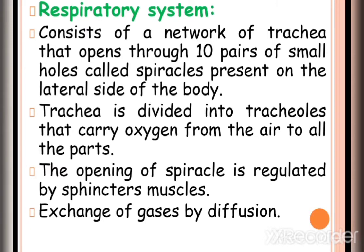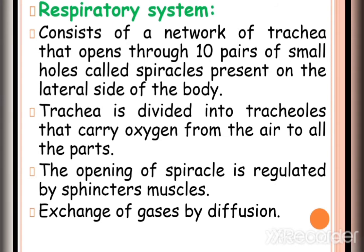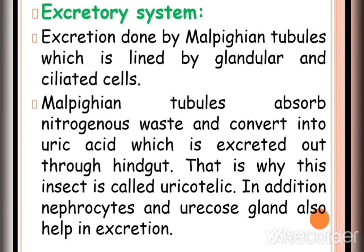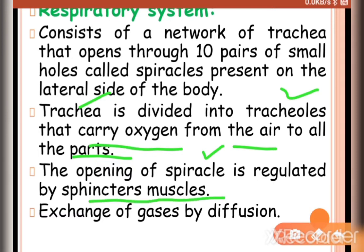The respiratory system consists of a network of trachea that opens through 10 pairs of small holes called spiracles, present on the lateral side of the body. The trachea carry oxygen from the air to all parts of the body, and the opening of the spiracles is regulated by sphincter muscles. The exchange of gases occurs by diffusion.